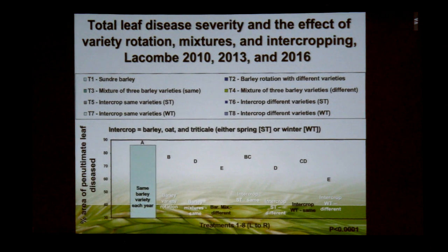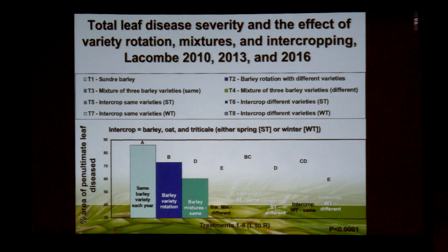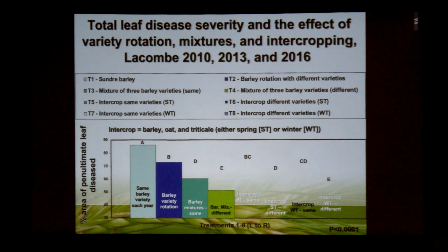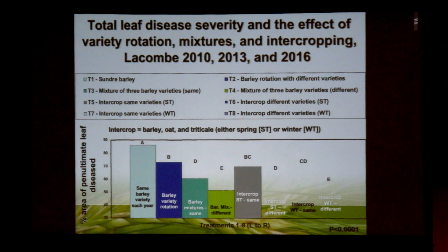The first treatment was simply growing the same variety year after year — Sundre barley. We then looked at barley variety rotation, reducing disease somewhat by simply changing the variety and changing the genetics each year. We then looked at mixtures, keeping the component varieties the same each year across the three-year rotational sequence, and then changing the genetics of those components each year. Over that three-year period, instead of using the same three components we used nine different sources of genetics in terms of barley varieties.